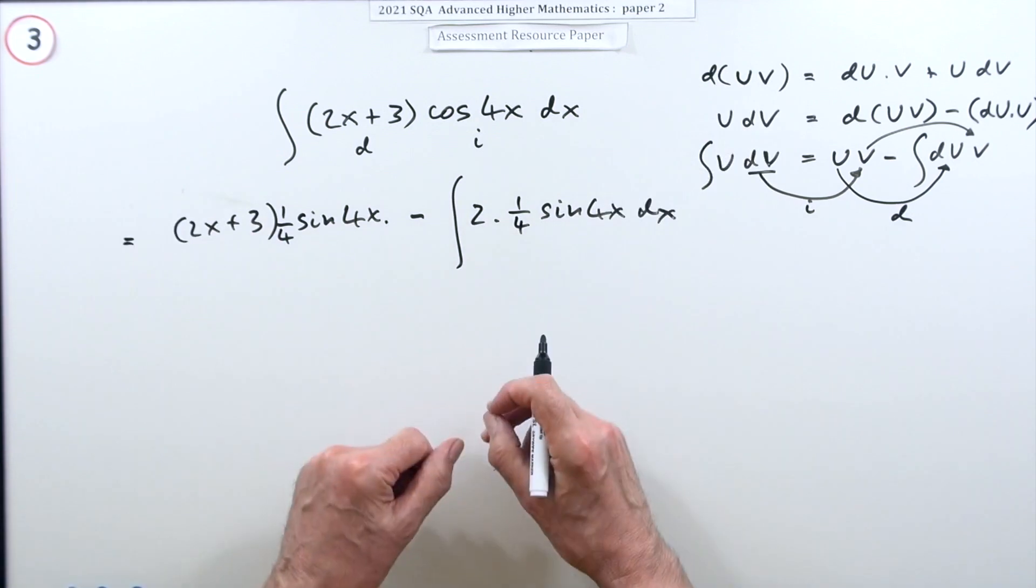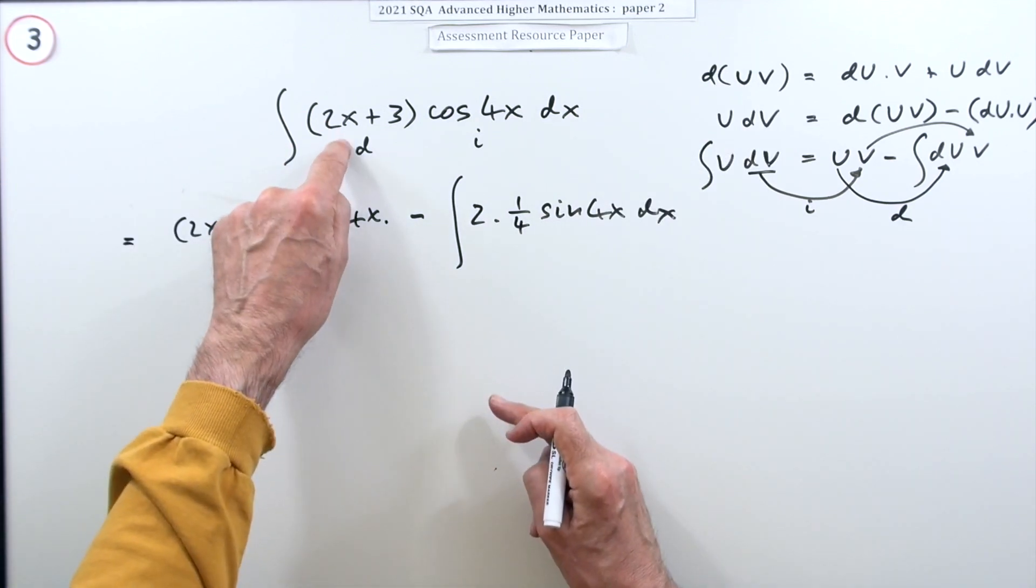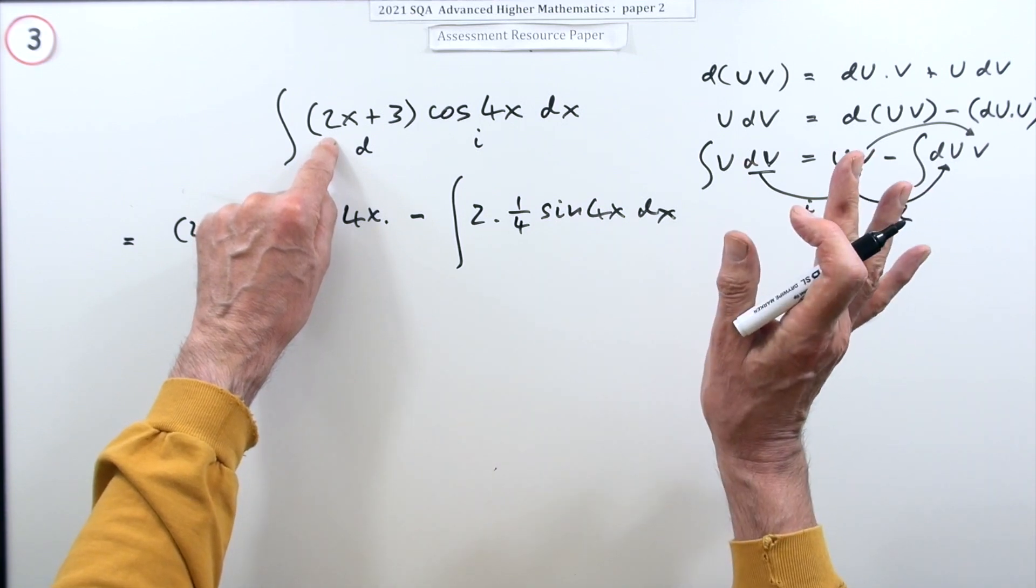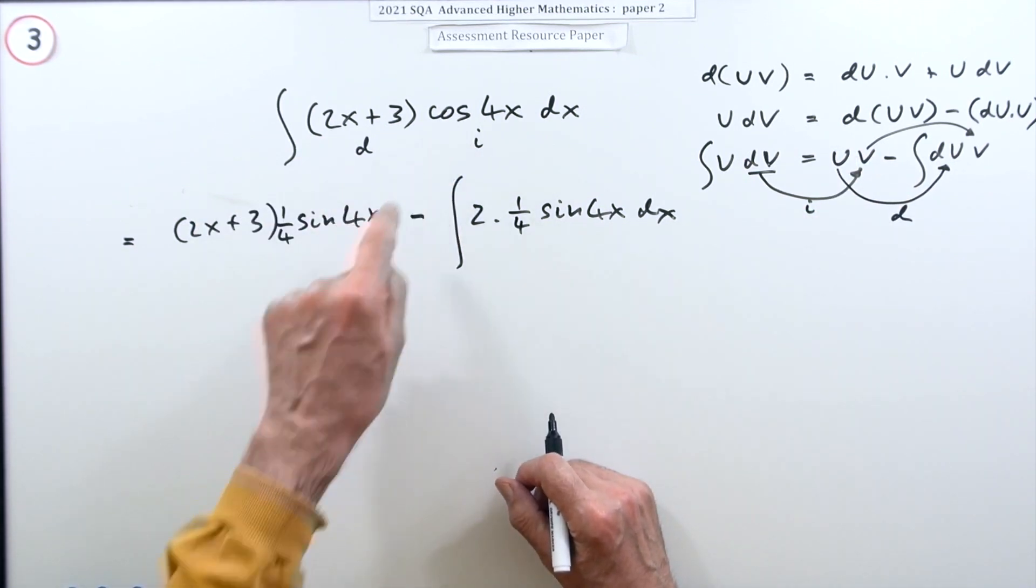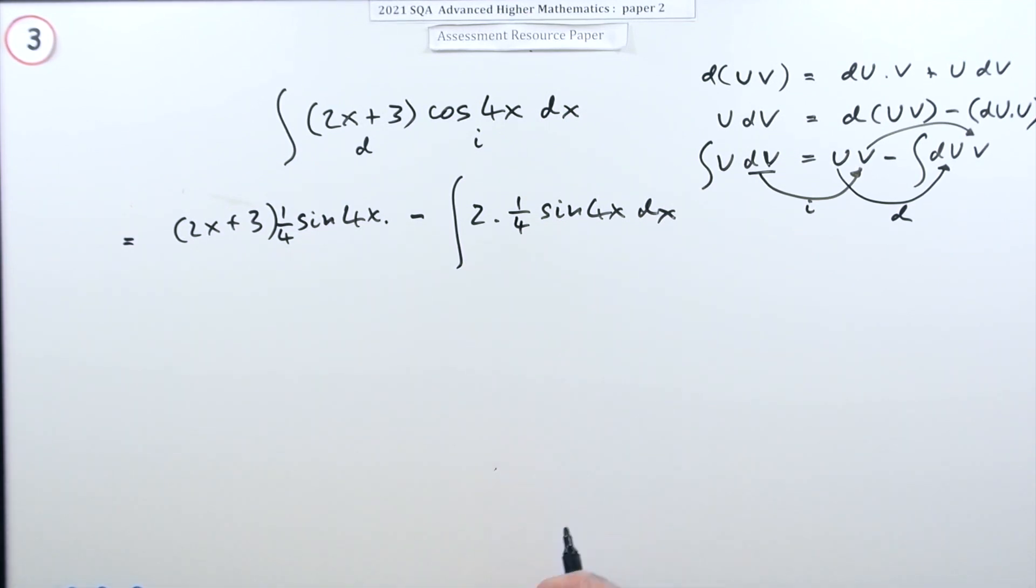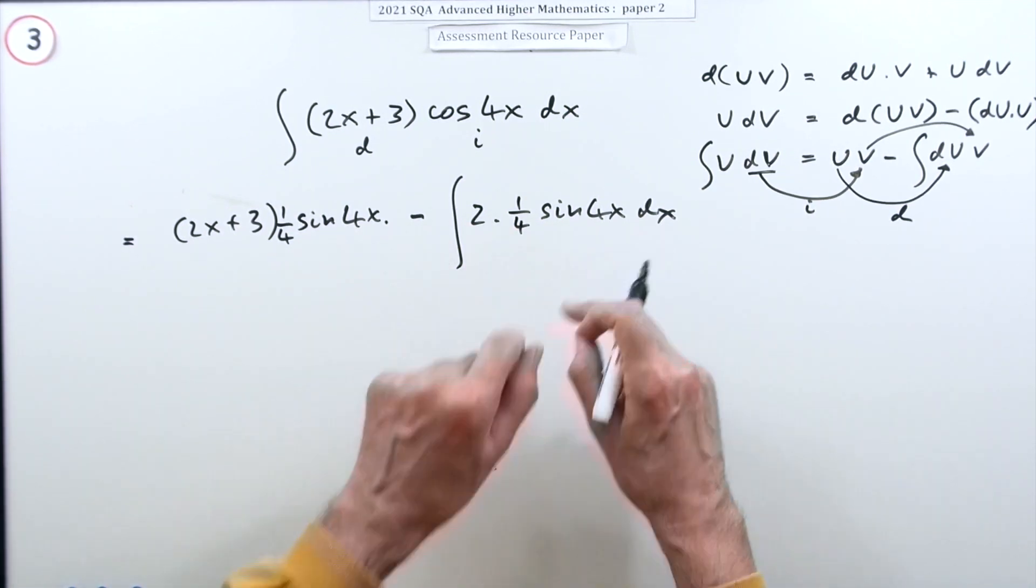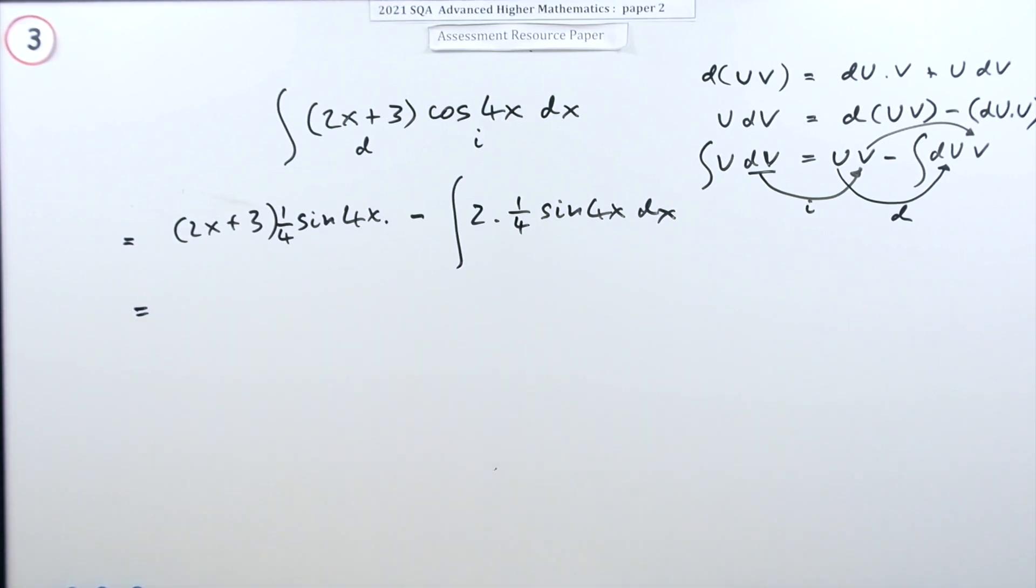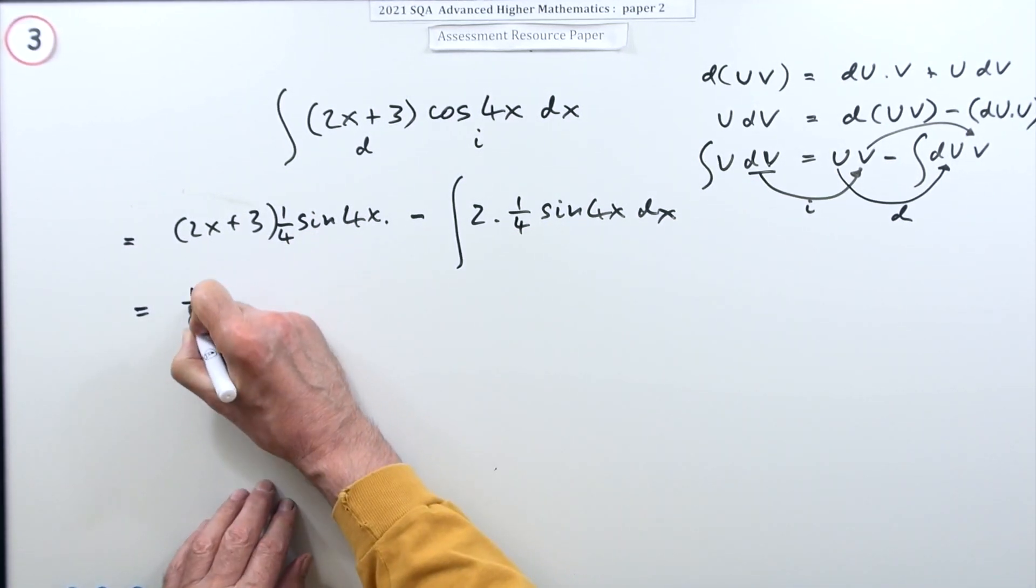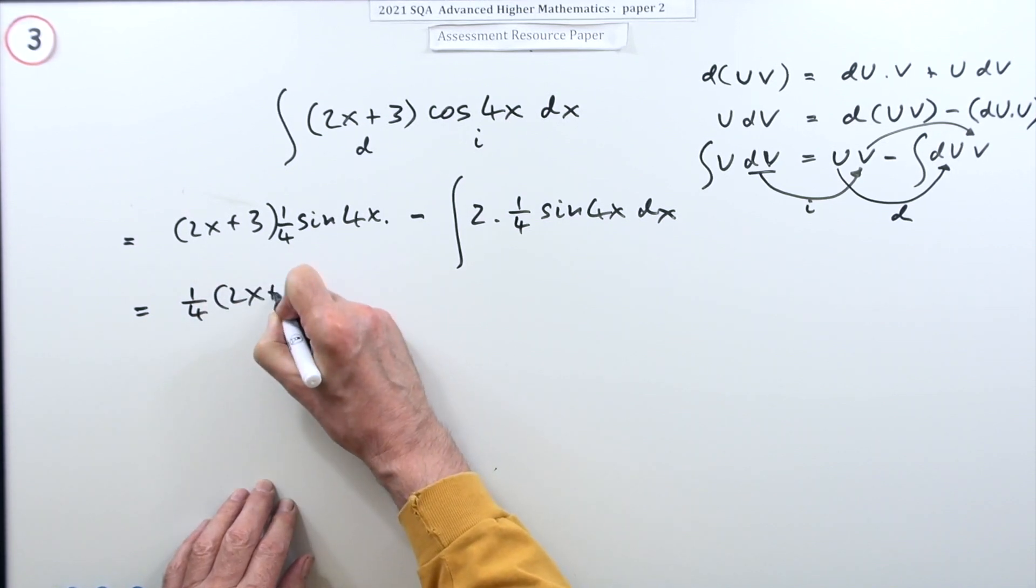That's the first line which you can just go straight into once you've remembered the pattern. Choose which one you want to differentiate, that's the one that'll hopefully whittle away and disappear, and integrate the other one. First they just take their turn: integrate and then differentiate the other, that just carries forward. Right, now that's worth some marks. The first two marks are in there already. I'll just tidy this up though. That's a quarter of (2x+3) times sin(4x).